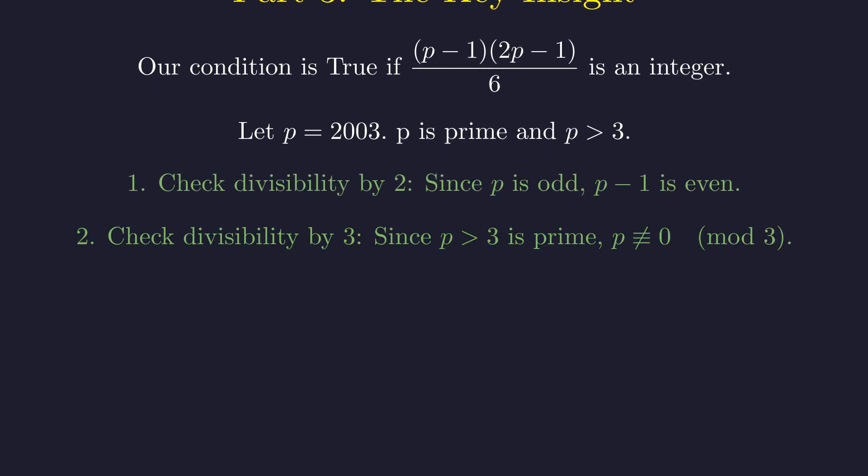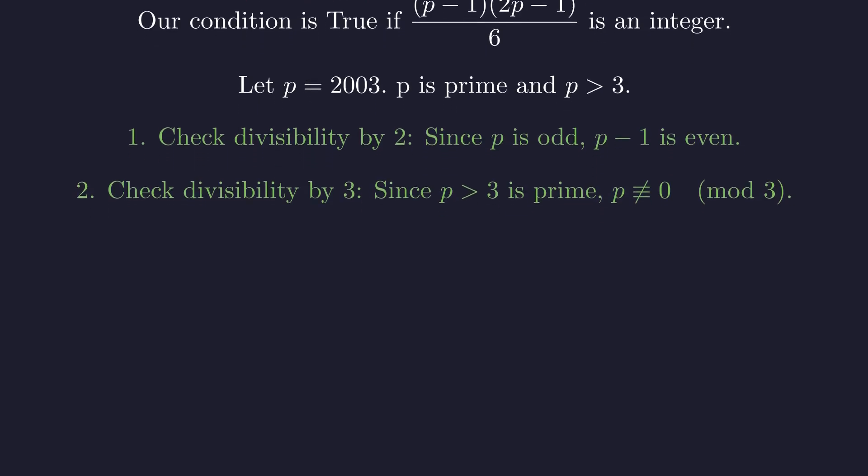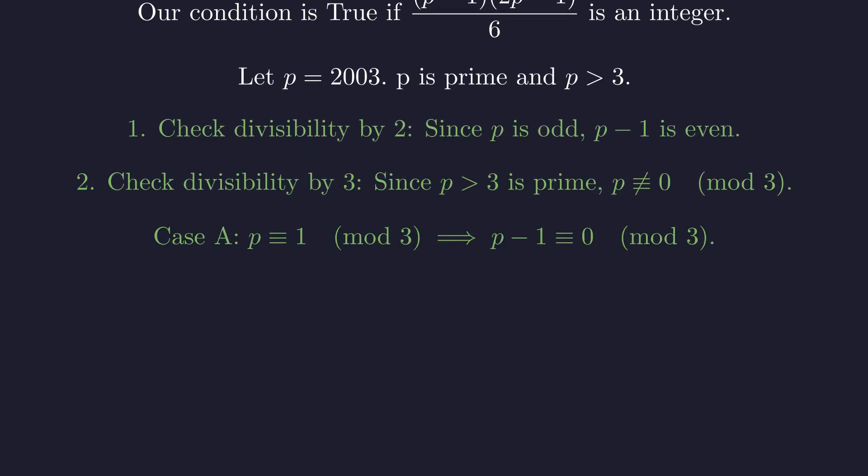Next, we check divisibility by 3. Since p is a prime other than 3, it cannot be divisible by 3. So p has remainder either 1 or 2 when divided by 3. In the first case, if p leaves remainder 1 when divided by 3, then p minus 1 is divisible by 3. So our numerator has a factor of 3.